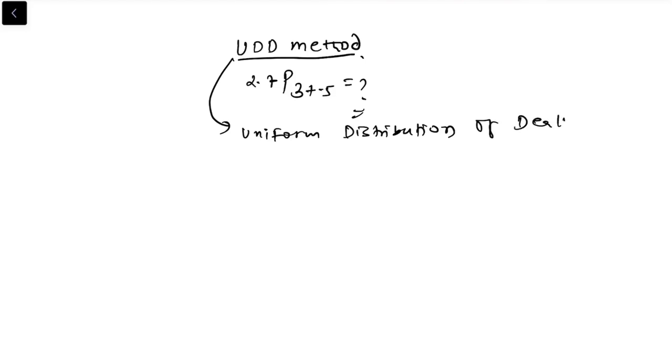UDD is based on the assumption that for integer x and t lying between 0 to 1, the function tpx mu x plus t is constant.